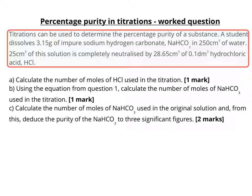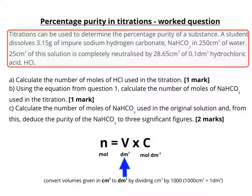Part A says: calculate the number of moles of HCl used in the titration. That's going to need the equation: number of moles equals volume times concentration. Notice that they want the volume in decimetres cubed, so you have to convert your units. The volume in the question is given in centimetres cubed, so you divide 28.65 by 1000 to convert it into decimetres cubed.